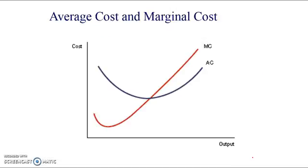The most common cost diagram shows just average costs and marginal costs — we don't typically include all the other curves. These are the curves used when looking at monopolies, perfect competition, and oligopolies. Notably, marginal cost intersects average cost at its lowest point, which is the point of productive efficiency — something you should remember from the AS course.